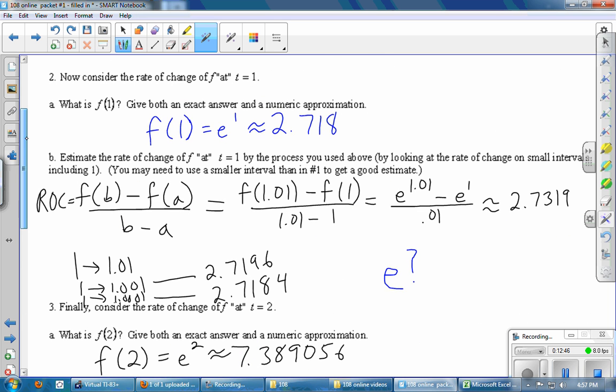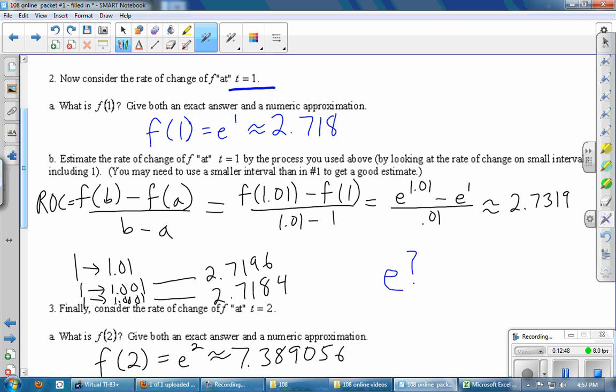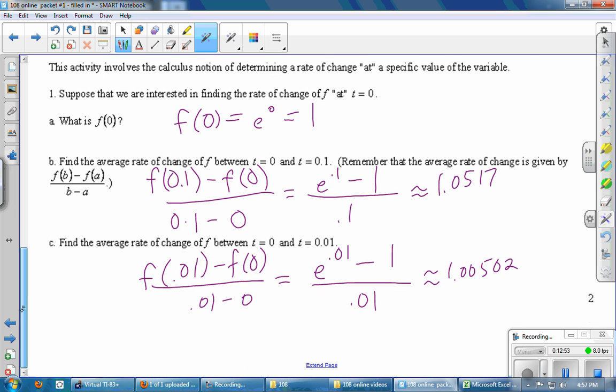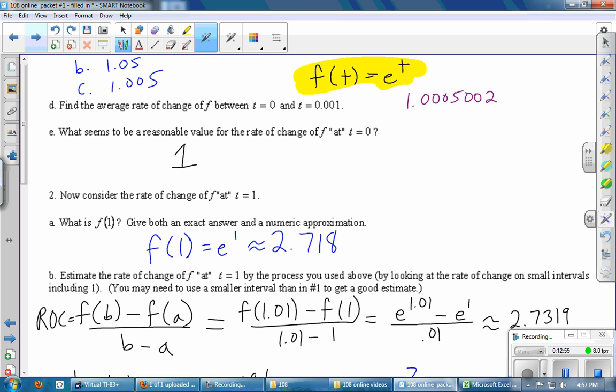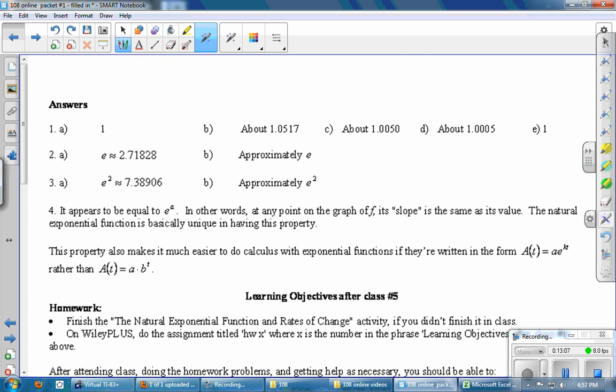At t equals 2, the instantaneous rate of change is e squared. At t equals 1, the rate of change was e, which I guess is e to the 1. And let's see if that pattern continued back here. At t equals 0, the rate of change sure looked like it was 1, which is e to the 0. So next page.